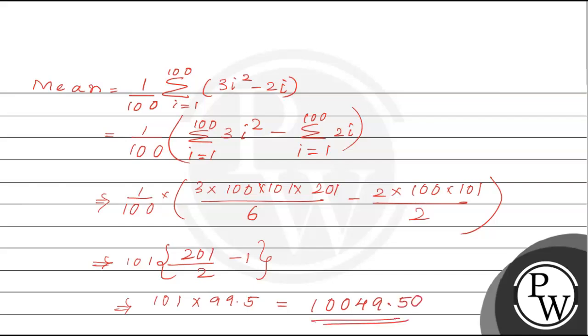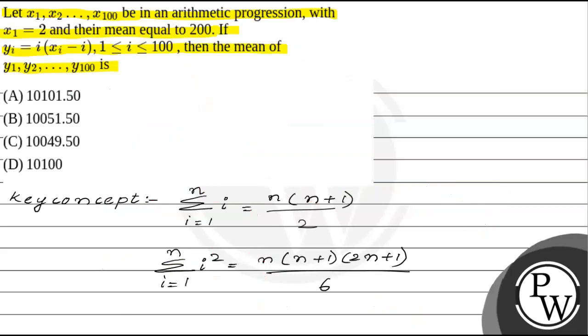So 10,049.50 is the required answer for this question. From the given options, 10,049.50 is option C. This is the correct answer. I hope you understood it well. Good luck.